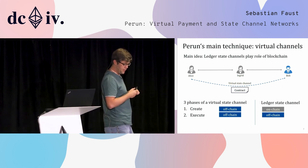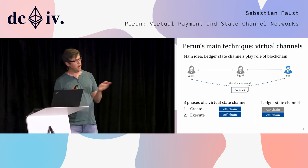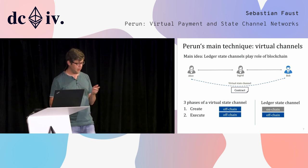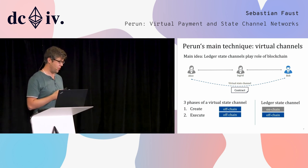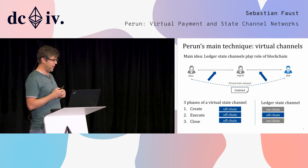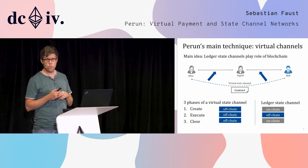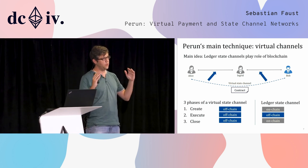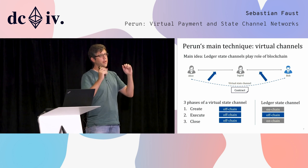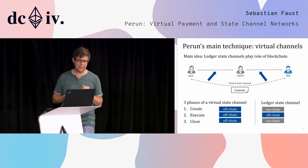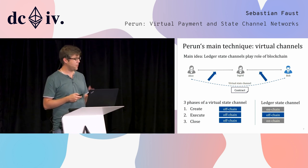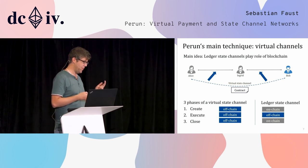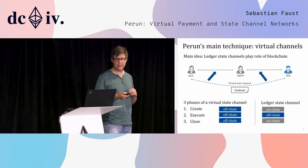In the execution phase, Alice and Bob can execute multiple contracts off-chain — similar to what happens in ledger state channels. Finally, when Alice and Bob no longer want to use their channel, they can close it by going not to the blockchain but to the underlying ledger state channel. The key advantage is that all three phases — create, execute, and close — happen off-chain without interaction with the ledger, in contrast to ledger state channels.